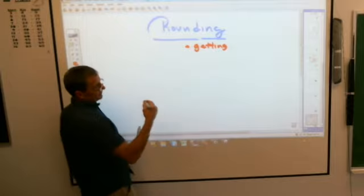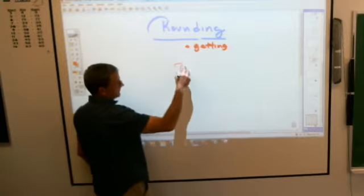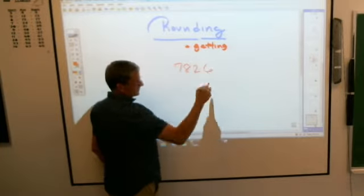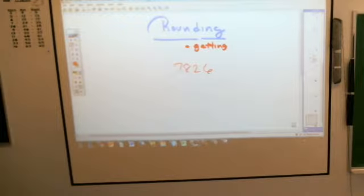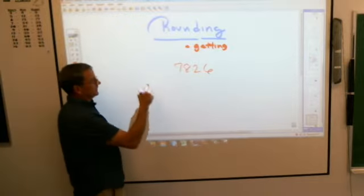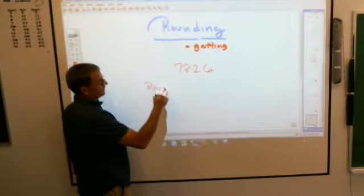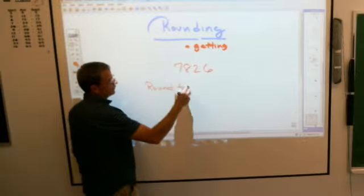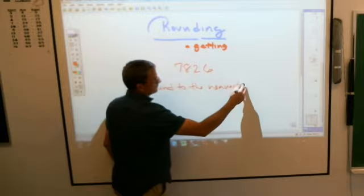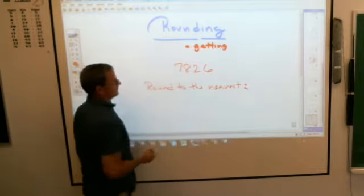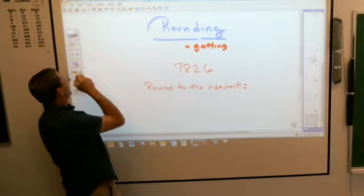When we talk about rounding, let me throw a number out here. Let's say I have 7,826. When you are asked to round a number, they have to tell you what you're rounding to. For example, let me say, write this down. Round 2, and we'll say the nearest.